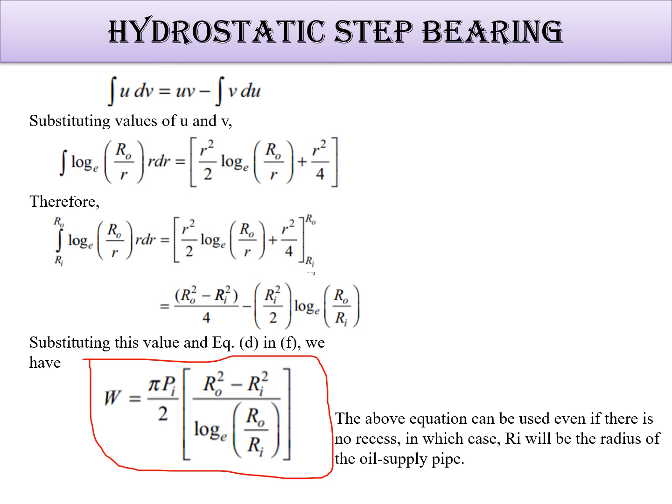This can be used even if there is no recess, in which case Ri will be written as the radius of the oil supply pipe.